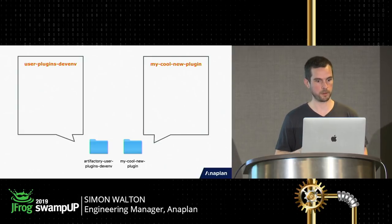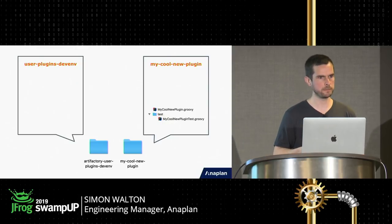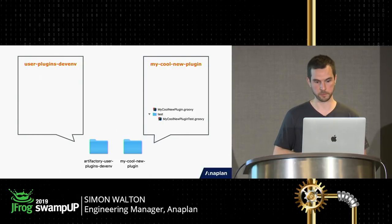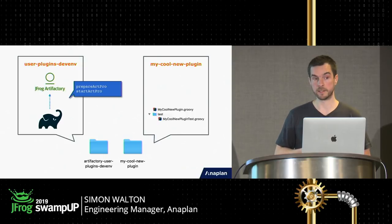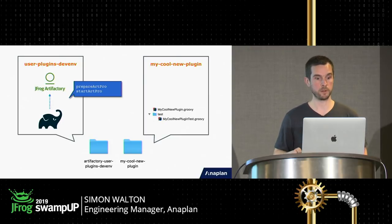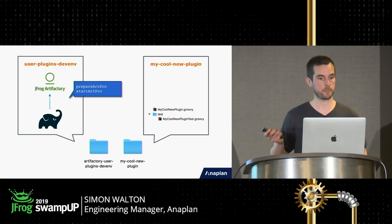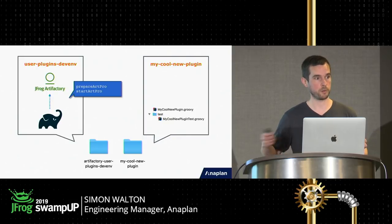When you write a plugin, you clone the development environment and create a new plugin folder. That folder contains two files: the plugin itself — `myCoolNewPlugin.groovy` — and a test file expressing integration tests against Artifactory running your plugin. The dev environment is a Gradle project with tasks specific to Artifactory plugin development. You run `prepareArtPro` to download your chosen Artifactory version, then `startArtPro` which starts a real Artifactory in the background, waits for it to finish starting, and hands you back control. It monitors the logs for specific messages — quite clever.